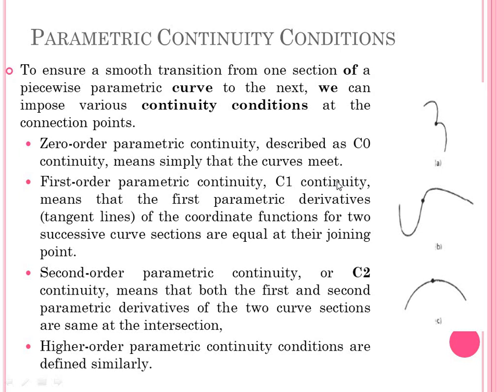C1 continuity, or first order parametric continuity, requires that the first parametric derivative of the coordinate functions for two successive curve sections are equal at their joining points. The first parametric derivatives represent the tangent lines, so the tangent lines of the two successive curve sections must be equal at their joining point. In the example, the tangent lines are equal for both curve sections, meaning C1 continuity condition is met.